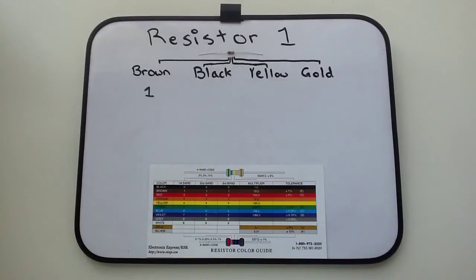Brown is equal to 1, black is 0, yellow is 4, and gold is plus or minus 5%. The first band color is the first significant digit. The second band color is the second significant digit. The third band color is the number of zeros. And the fourth band color is the tolerance.